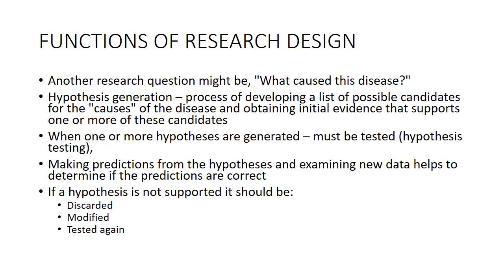Another question that could come up is: what causes disease? If you're looking for an answer like this, you're generally looking for hypothesis generation — listing possible candidates for a cause of disease and obtaining initial evidence supporting one or more of those candidates. If you're looking between two groups, the null hypothesis would be that both groups develop disease for the same reason. Making predictions from hypotheses and examining new data helps determine if those predictions are correct.